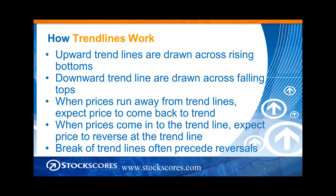Upward trend lines are drawn across rising bottoms. You look for the little pullbacks that make lows, and if they are rising from left to right, then you have rising bottoms — draw a line across those and you have an upward trend line. Downward trend lines are the opposite: we look for the falling tops and draw a line across those to establish the downward trend line.